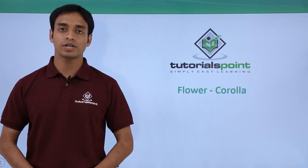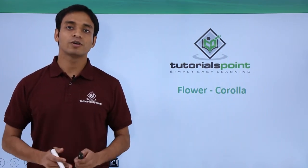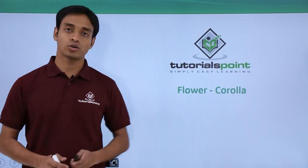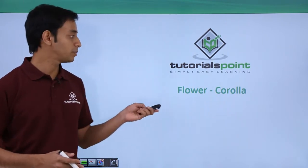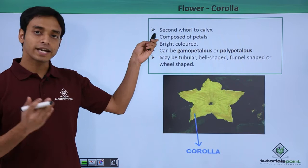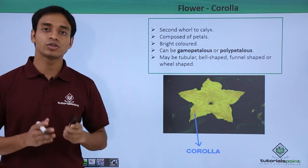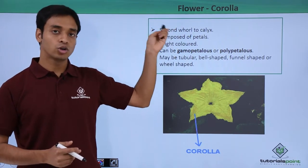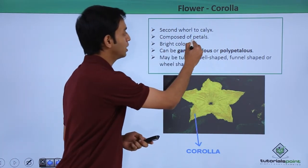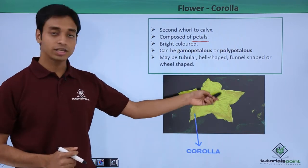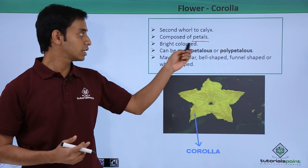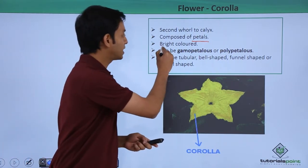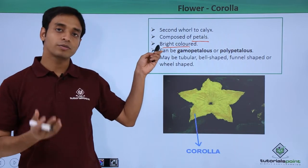Hello everyone, welcome to Tutorials Point. In this video we are going to talk about the second important part of a typical flower, which is known as corolla. Corolla is the second whorl, as compared to the calyx which we discussed in our previous video. Corolla consists of petals — as you can see here, the yellow colored full portion is the corolla or the petals of a typical flower. They are usually very brightly colored.